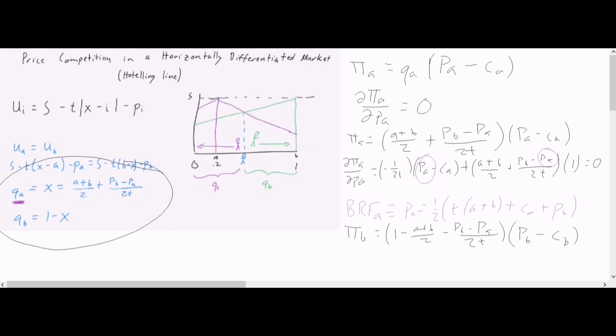Firm B, the way we're going to get their best response is the same way. Derivative of profit for firm B with respect to the price of firm B. We're going to set that equal to 0. And from there, we'll get a best response for firm B. The best response function for B is defined as price for B equals T over 2 times 2 minus A minus B plus CB over 2 plus PA, T over 2. Okay, we got two best response functions now.